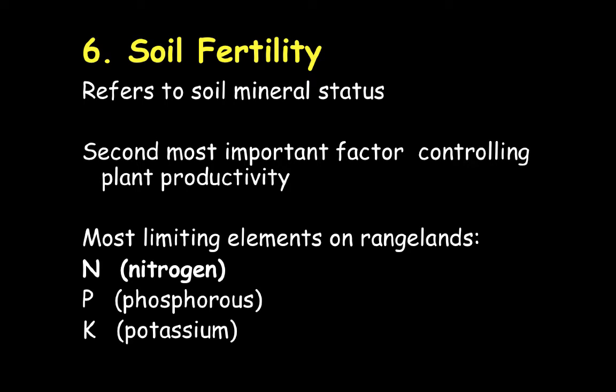Soil fertility refers to mineral status — the biodiversity of minerals and the amount of minerals in the soil — and this is a really important part of controlling plant productivity. Soil fertility is hard to manage in rangeland because, unlike cropping systems, we really don't have the ability to apply different amounts or additional sources of nutrients like we do in fertilization systems. Keep in mind that when it comes to soil fertility, the most limiting elements on rangeland are going to be nitrogen, phosphorus, and potassium — the same things we supplement in most row crop situations. These are also common soil additions in greenhouse situations, and we tend to formulate fertilizers off of NPK ratios.